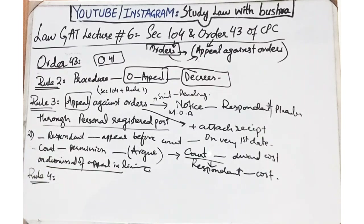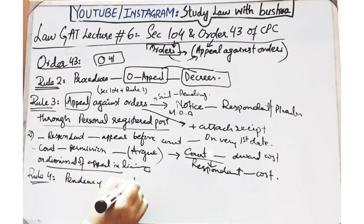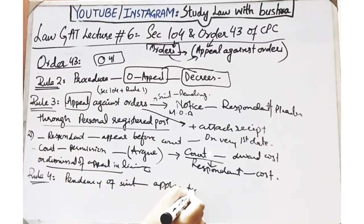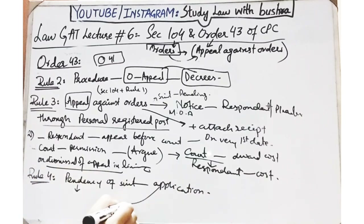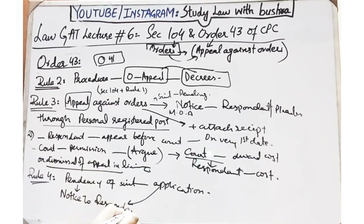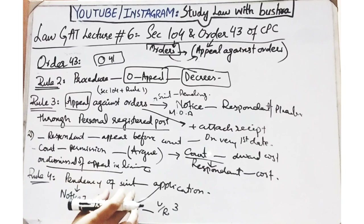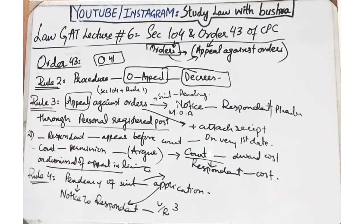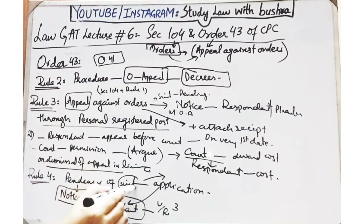Rule 4 kehta hai ke agar kahi par aap koi application dete ho during the pendency of the suit, to uska notice bhi aapne respondent ko dena hai as per Rule 3 of Order 43. Means to say ke jahan par aapne appeal ke dauran, during the pendency of appeal agar aap koi application court mein file kar rahe ho, to Rule 3 ke andar aapne uska notice dena hai apne respondent ko - yani in person aur through personal registered post, us ka notice lazmi dena hai respondent ko.